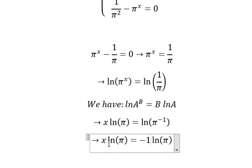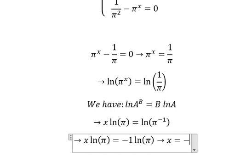So we need to divide both sides by natural logarithm of π, and you got x equals to negative number one.